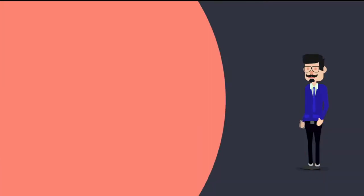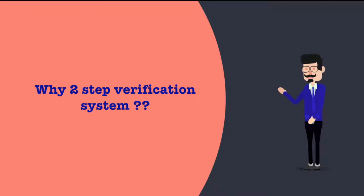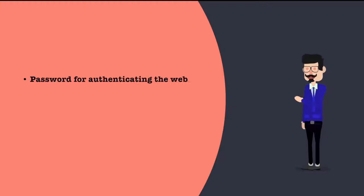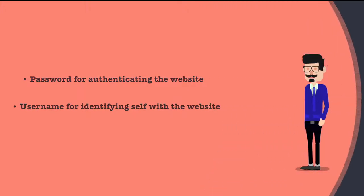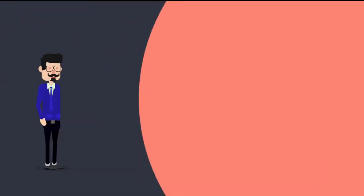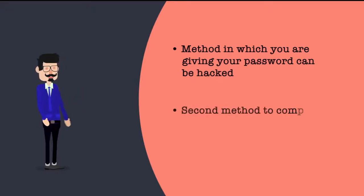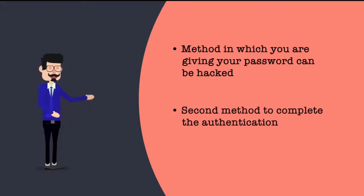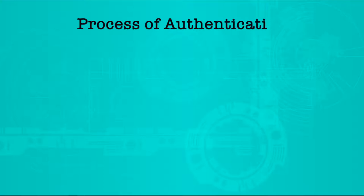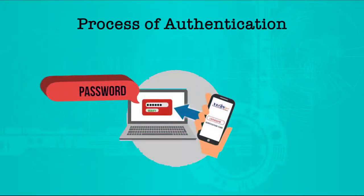So why would people suggest a two-step verification system? When you give a password, you are authenticating with the website. When you give your username, you are identifying yourself. It may happen that the method in which you give your password can be hacked. So we need to cater to a second factor — a second medium — wherein you supply additional information to complete authentication. The process will have two steps: the first is the password, and the second is a special code delivered through a different medium.